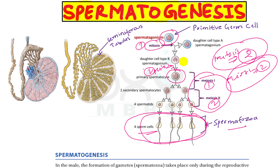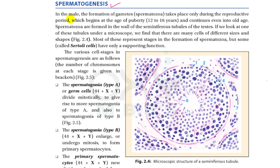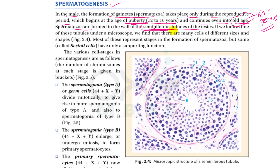In males, formation of spermatozoa takes place only during the reproductive period, which begins at puberty (12 to 16 years) and continues into old age (60 to 70 years). Spermatozoa are formed in the wall of the seminiferous tubules of the testes.